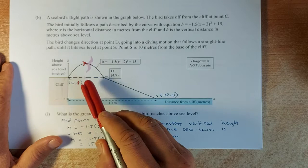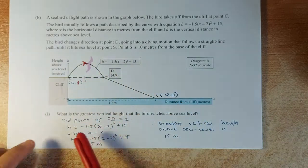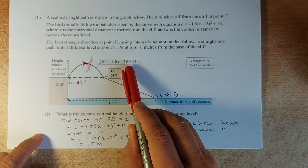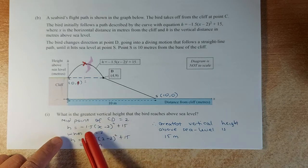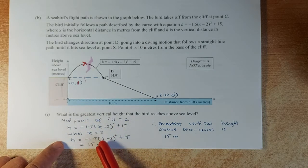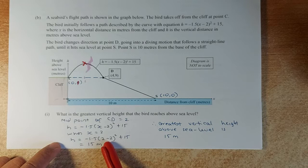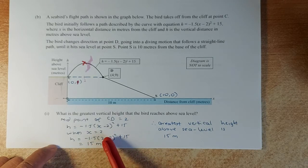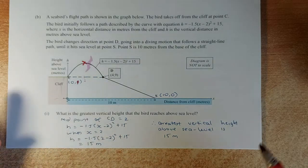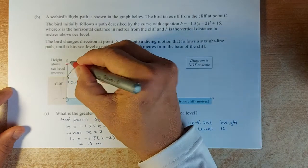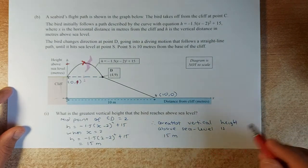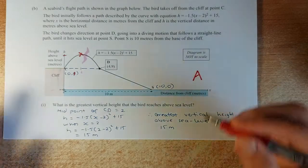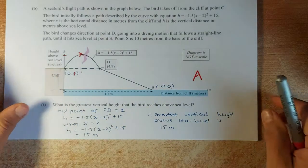To find the greatest height, you need to substitute x equals 2 into that equation. So h equals -1.5(x-2)² + 15. We substitute x equals 2: h equals -1.5(2-2)² + 15. 2 minus 2 is 0, 0 times -1.5 is 0, so the answer is 15. So the greatest height is 15 meters, and that will give you your second achieve.